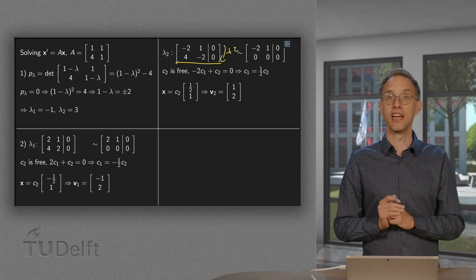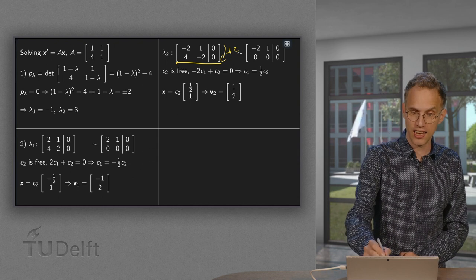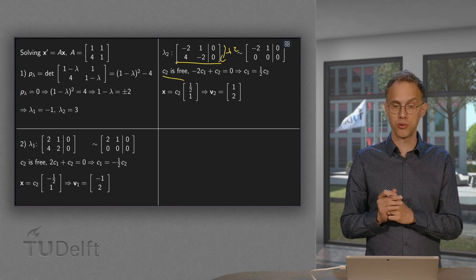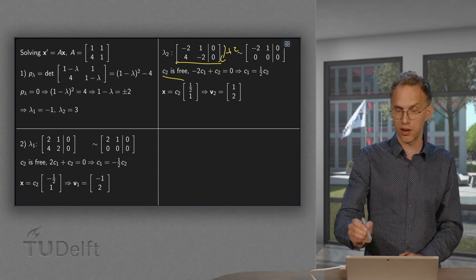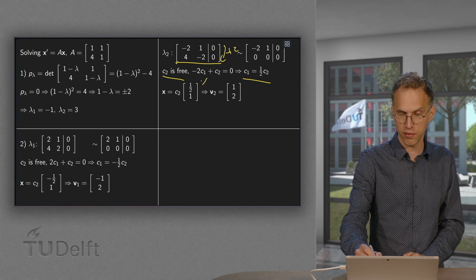And again, we get a 0 row as we should because now we have a free variable. Again, C₂ equals 3. And we have -2 times C₁ plus C₂ equals 0. So we can solve for C₁ equals 1/2 C₂. So here we have our C₁, 1/2 C₂.